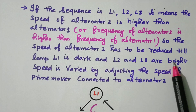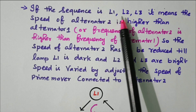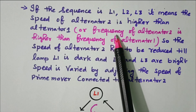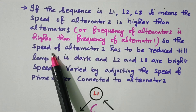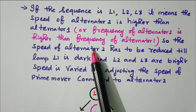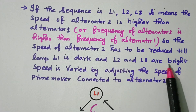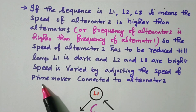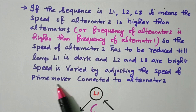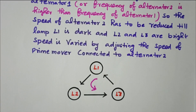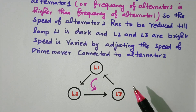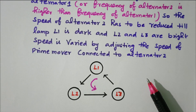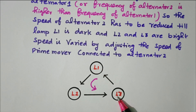When the sequence is L1, L2, L3, the frequency of alternator 2 is higher, so the speed of alternator 2 is reduced by adjusting the prime mover until lamp L1 is dark and lamps L2 and L3 are bright. At that condition, both speeds are equal. The speed is varied by means of the prime mover connected to the alternator.